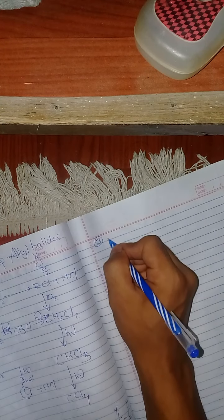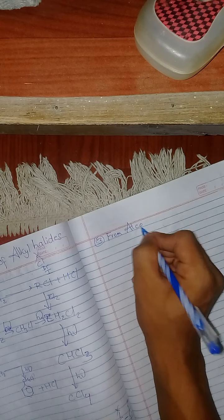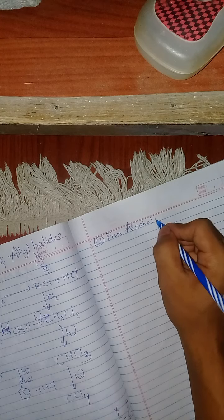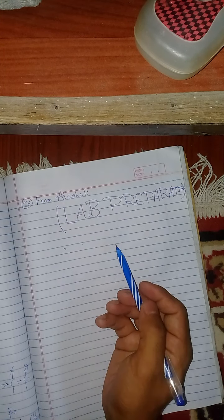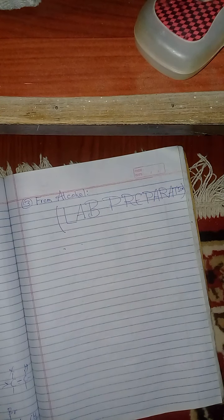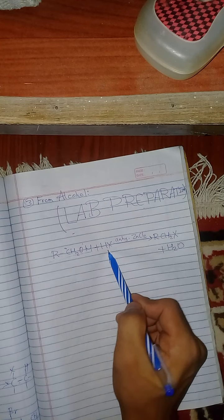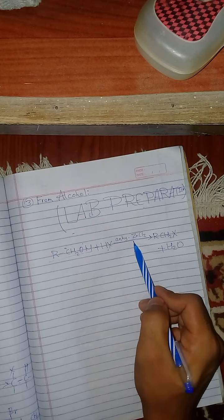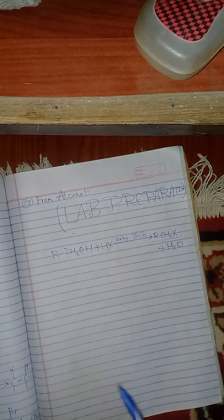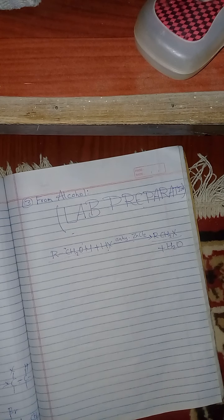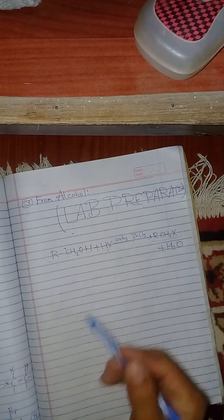Now we are going to study preparation from alcohol. It is a widely used method. In this reaction, alcohol is treated with anhydrous zinc chloride to obtain alkyl halide. When alcohol is treated with acid in presence of anhydrous zinc chloride, we get alkyl halide plus water. However, if rearrangement is possible, anhydrous zinc chloride permits rearrangement of the halide molecule.